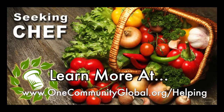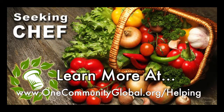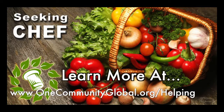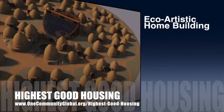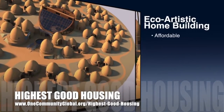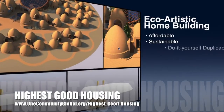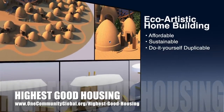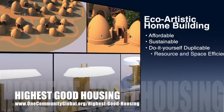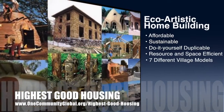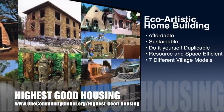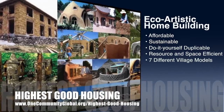The One Community approach to Highest Good housing is eco-artistic home building that is affordable, sustainable, do-it-yourself, duplicable, resource and space efficient, and consists of seven different sustainably constructed village models.